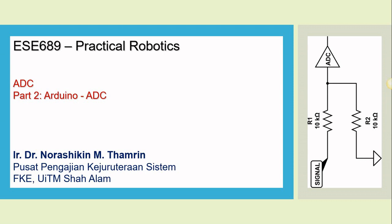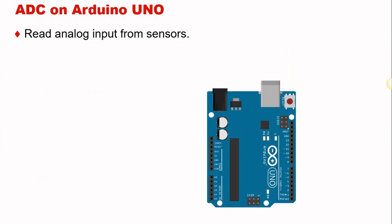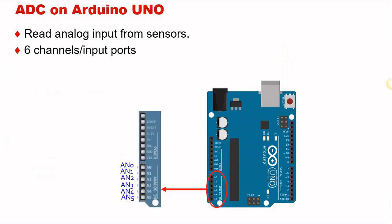Assalamualaikum and good day to everyone. Today we are going to concentrate on the second part of the ADC topic, and we're going to focus on the Arduino Uno development board for ADC. The main function of the ADC on the Arduino Uno development board is to read the analog input from the sensors. From this board you can see there are six channels or six analog channels that can be chosen to connect your sensors with your Arduino.